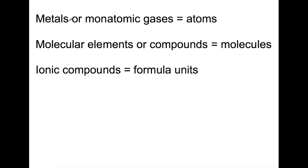A mole of metals or a mole of a monatomic gas is the number of atoms which are present. A mole of molecular elements or compounds is the number of molecules that are present, and the mole for an ionic compound is the number of formula units.